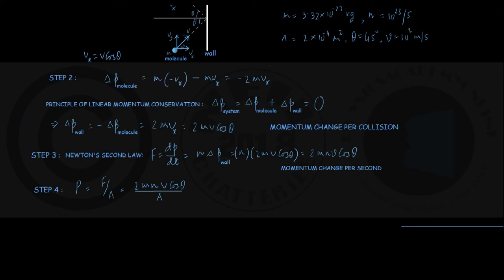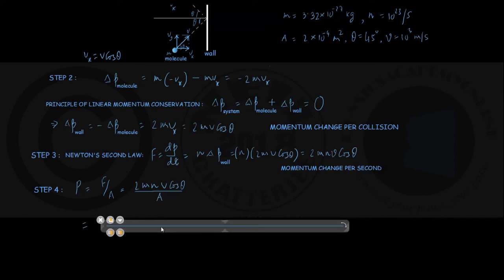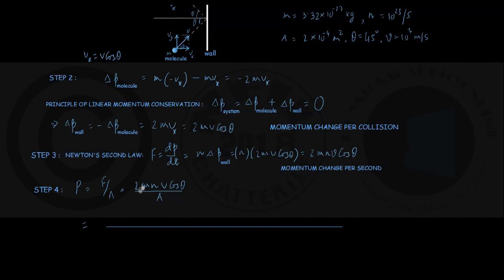Until now we have got things in symbolic form. So in the last step we can put the numerical data from above and write down - the data is listed here. So let us start: 2 × m, mass of each molecule 3.32 × 10^(-27) kg. Then comes n, the collision frequency 10^23 per second. Then comes V, the speed 10³ m/s.